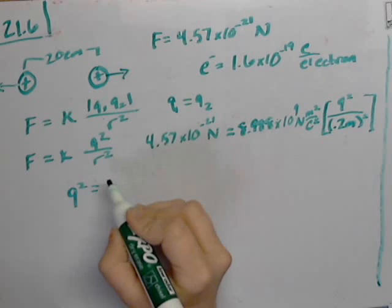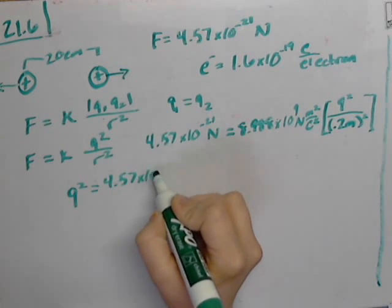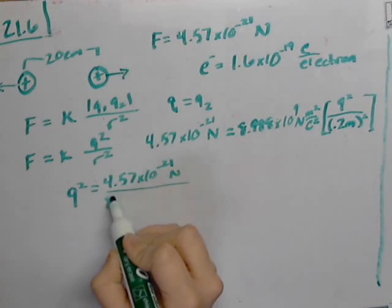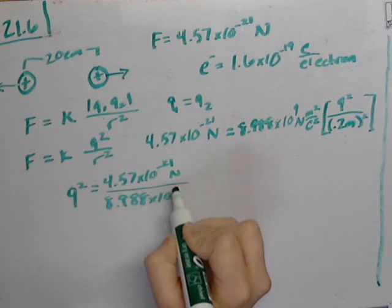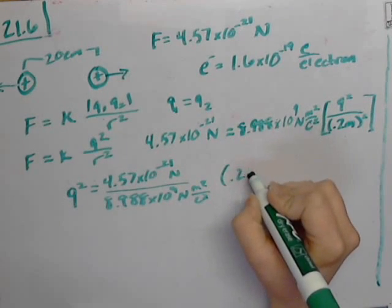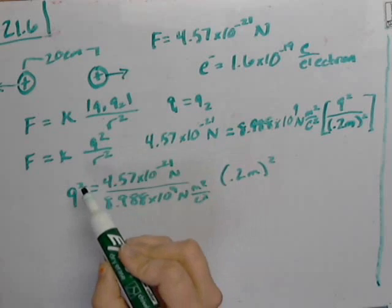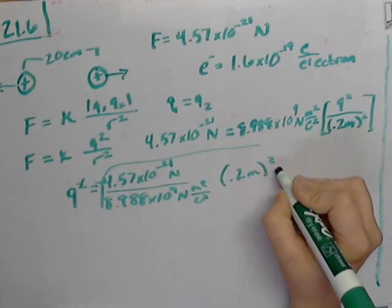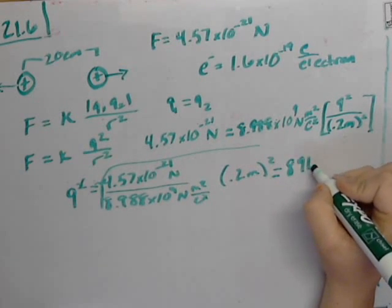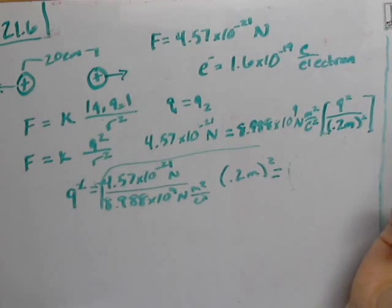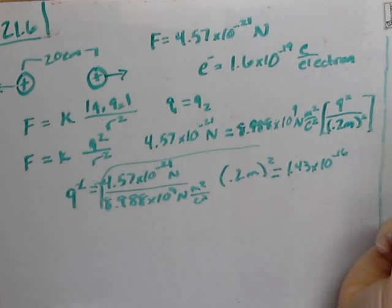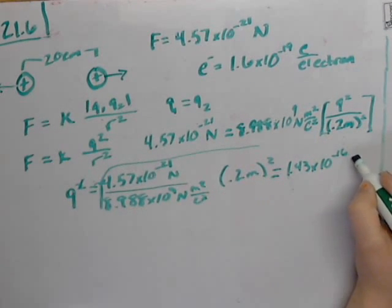Q squared equals 4.57 times 10 to the negative 21 newtons divided by 8.988 times 10 to the 9th newtons meters squared coulomb squared times 0.2 meters squared. Take the square root of this. So the Q that you should come up with, the charge that you should come up with, is 1.43 times 10 to the negative 16th. When we look at all our units, they cancel out to coulombs.